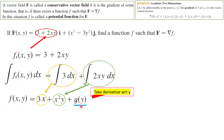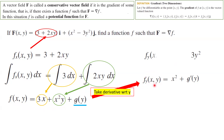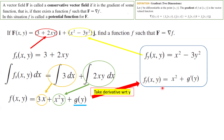Now take the partial derivative with respect to y of the potential function we're building. The derivative of 3x with respect to y is 0, the derivative of x²y with respect to y is x², and the derivative of g(y) is g′(y). Based on the definition, the partial derivative with respect to y must equal the second component of the vector field. So we set x² − 2y² equal to x² + g′(y), which gives g′(y) = −3y².